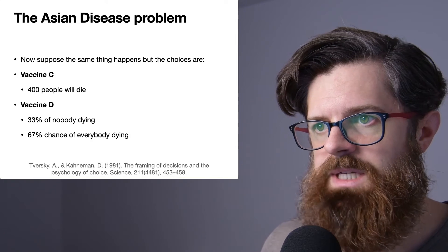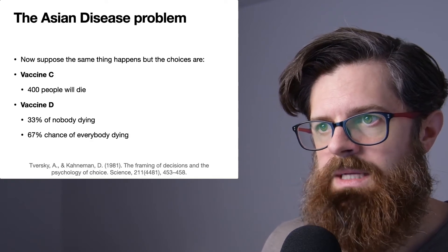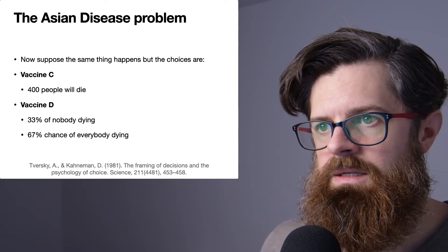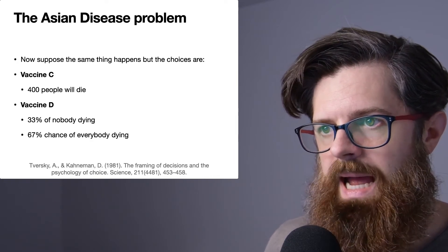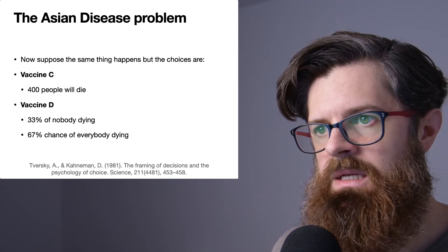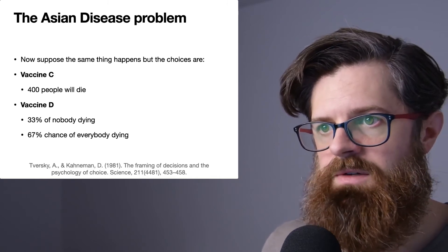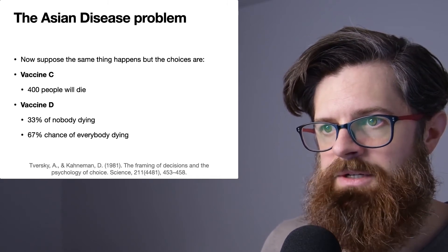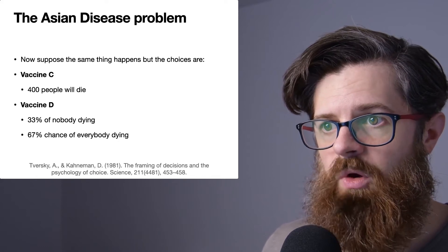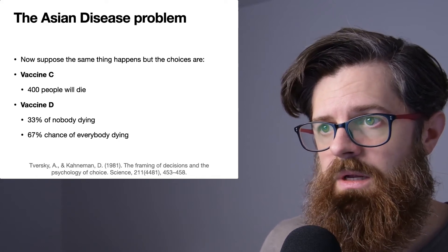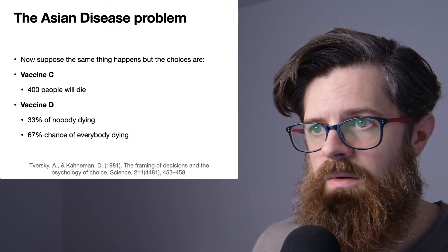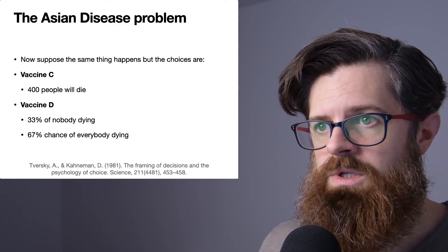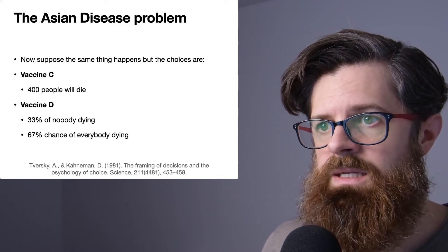The idea is that if you chose Vaccine C, then 400 people will die. If you chose Vaccine D, you'd have a one-third chance of nobody dying and a two-thirds chance of everybody dying. Before we move on, have a quick think about: in this situation, would you prefer Vaccine C or Vaccine D?